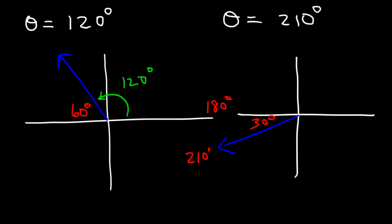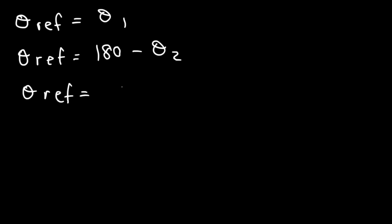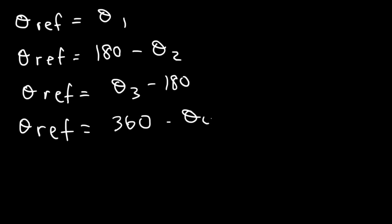The reference angle is always between the terminal ray and the x-axis. There are some equations you can use to easily find the reference angle. Anytime you have an angle in quadrant 1, the reference angle equals that angle. In quadrant 2, it's 180 minus the angle. In quadrant 3, it's the angle minus 180. And in quadrant 4, it's 360 minus the angle.